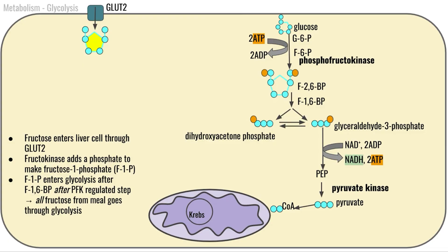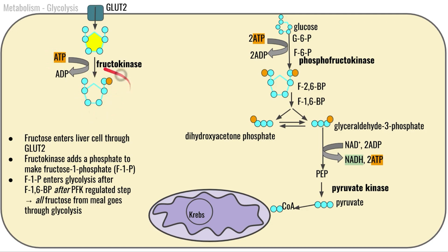We are going to talk about fructose. Fructose is entering our cell — in this case we are talking about a liver cell — so fructose is going to enter through GLUT2. Here's fructose in yellow. Fructose is going to go through a similar first step in that it is going to have a phosphate added to it to make fructose-1-phosphate, and that is with a different enzyme called fructokinase, but it's essentially doing the same thing that glucokinase did.